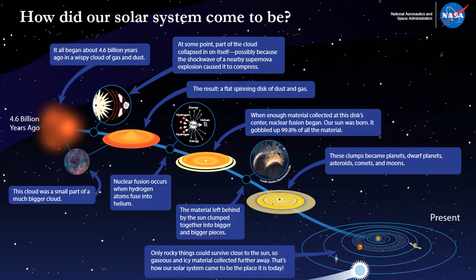Heavier substances close to the Sun formed the terrestrial planets — Mercury, Venus, Earth, and Mars. These planets are small and mostly made of rocky substances. Lighter substances such as gases gathered further away from the Sun, forming the gas giant planets — Jupiter, Saturn, Uranus, and Neptune — which are much larger than the terrestrial planets.